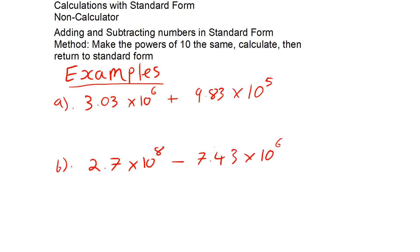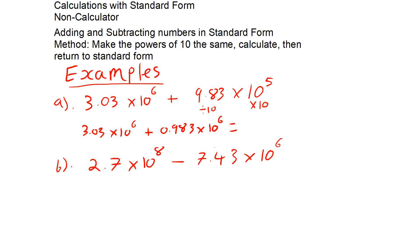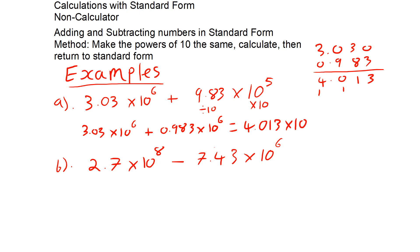That answer is already in standard form. Here are some more examples. If I have 3.03 times 10 to the 6 plus 9.83 times 10 to the 5, I can make the 10 to the 5 into a 10 to the 6 by multiplying by 10, but then I divide 9.83 by 10 to balance. So I have 3.03 times 10 to the 6 plus 0.983 times 10 to the 6. Doing 3.03 plus 0.983 gives 4.013, so the answer is 4.013 times 10 to the 6.